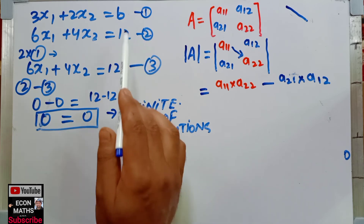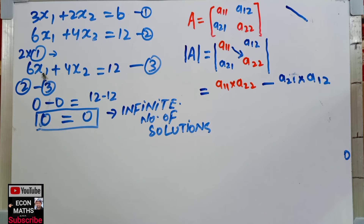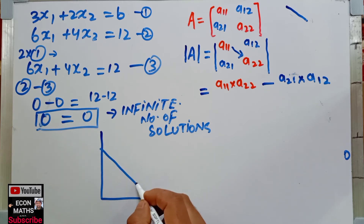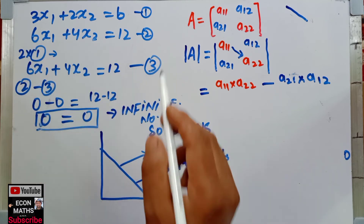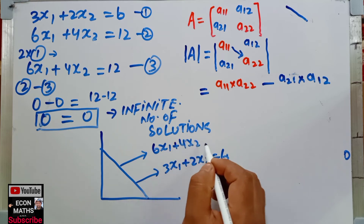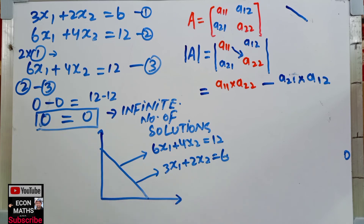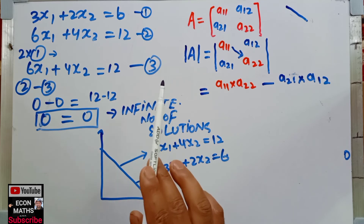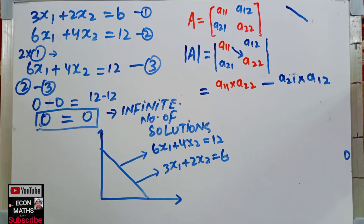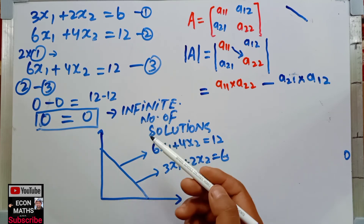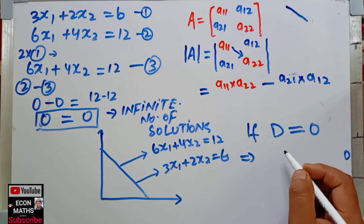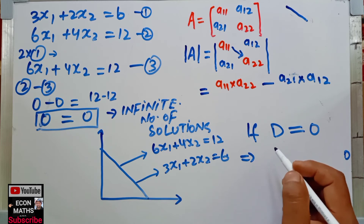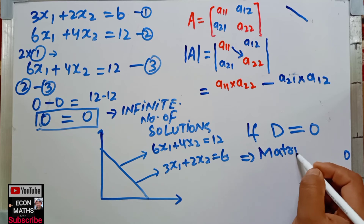These two equations are linearly dependent. Graphically, both equations represent the same line, so if there is linear dependence between the two equations, we have an infinite number of solutions. When the determinant equals zero, the matrix is singular.